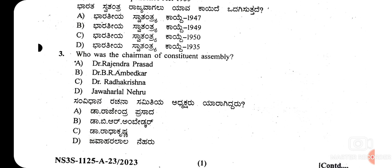The third question is: who was the chairman of the Constituent Assembly? The chairman of the Constituent Assembly was Dr. Rajendra Prasad. Dr. Satchidanand Sinha was the first temporary chairman, and later Dr. Rajendra Prasad was elected as president. Its vice president was Harendra Kumar Mukherjee. The right answer for the third question is A.